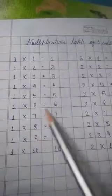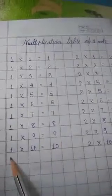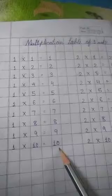1×6 is 6. 1×7 is 7. 1×8 is 8. 1×9 is 9. 1×10 is 10. So, you will read at your home in this way.